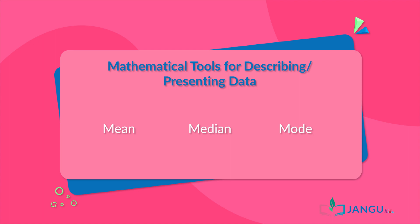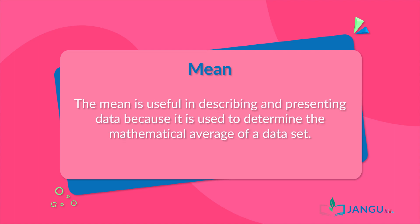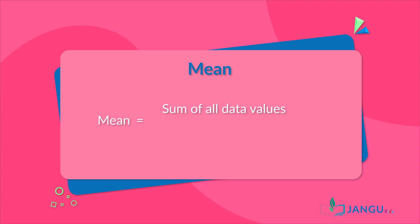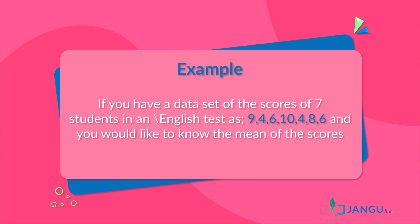Now let's take a look at them one after the other. One: Mean. The mean is useful in describing data because it is used to determine the mathematical average of a data set. To calculate the mean, the sum of all data values is divided by the number of data values. For example, if you have a data set of the scores of seven students in an English test as nine, four, six, ten, four, eight, and six,